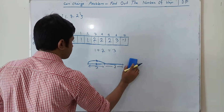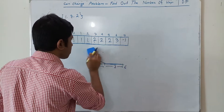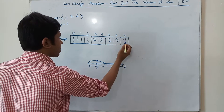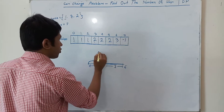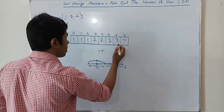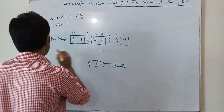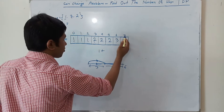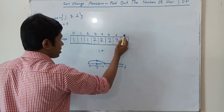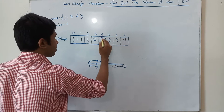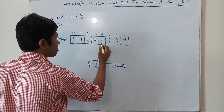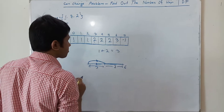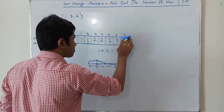Now for value 7: the existing number of ways is 1, and by using coin 3 the number of ways for 7 minus 3 equals 4, which is 2. So the total is 3. We put 3 here.